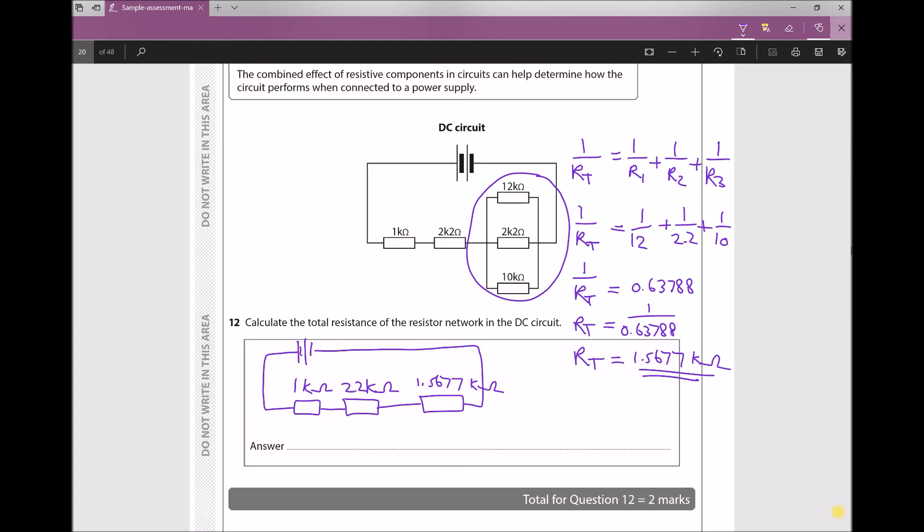Now all we have, if we refer to our diagram, is we have three resistors in series: we have a 1 kiloohm, a 2.2 kiloohm, and a 1.5677 kiloohm. So now, to find the total resistance in the circuit, all I need to do is add those three together.